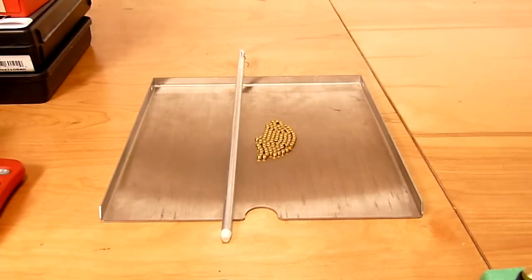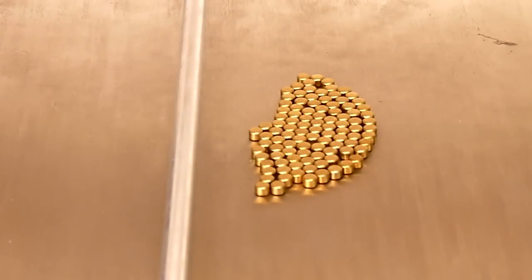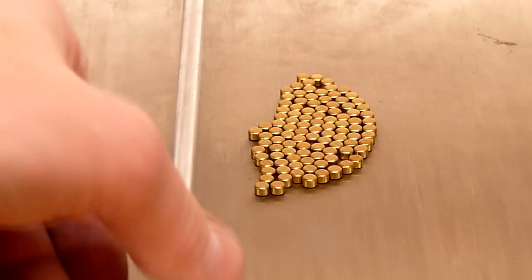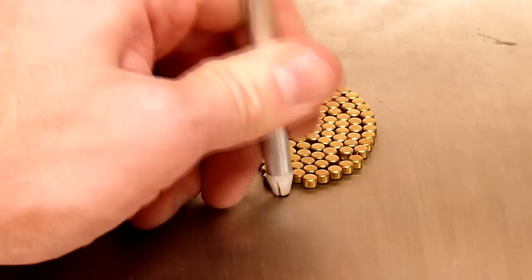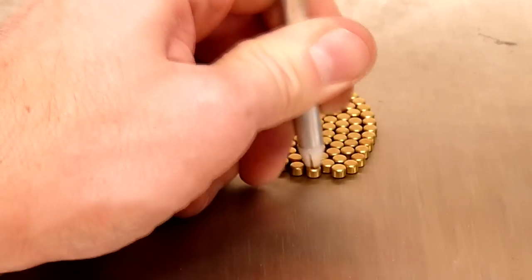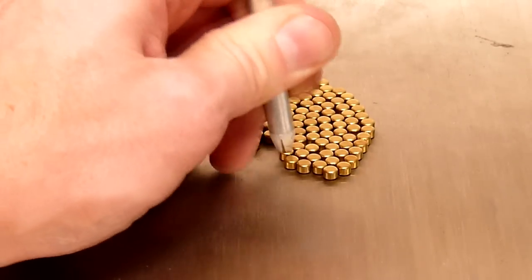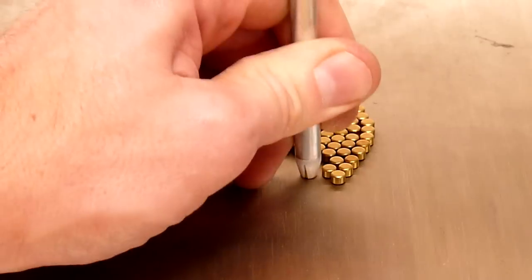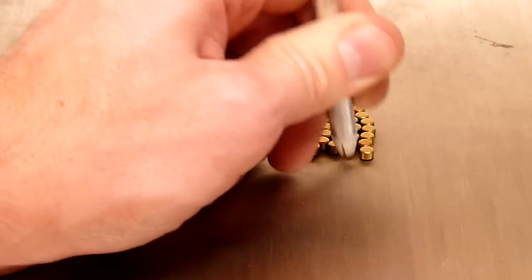Next we'll fill the priming system with Winchester small pistol WSP primers. I've already taken a flip tray and oriented these in the proper orientation for using the Hornady pickup tube to pick these primers up. We just stack them one by one. This priming system has a capacity of 100 primers. We'll just continue to work our way through this box of primers.